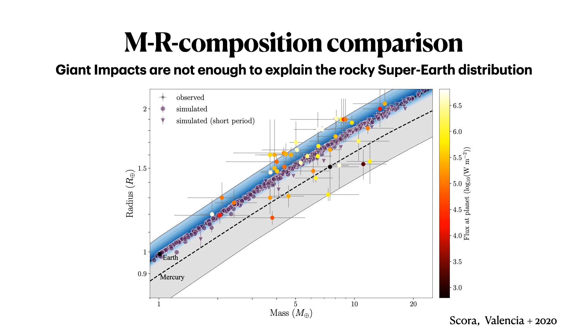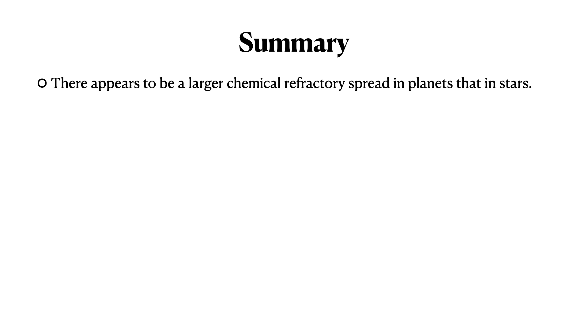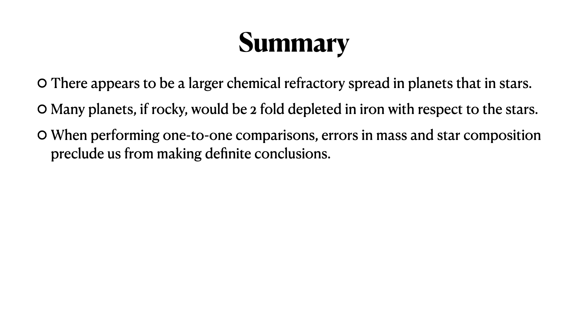And so of course it means we have to understand better how planets form, because it does seem that these planets are real. And so in summary, there appears to be a large chemical refractory spread in planets more than in stars. If, there are many planets that if rocky, there would be very depleted in iron with respect to the stars. And so it puts the onus on trying to see how you can form them, which we haven't been successful at. When performing one-to-one comparisons, it seems to me right now that the errors preclude us from making definite conclusions. But this, I would say is the first step into building a sample where we can make definite conclusions. It seems to be that there's a maximum iron enrichment of six grams per cc, perhaps coming from formation processes that need to be explained. But again, this is preliminary and we need to keep monitoring. And as I said, giant impact collisions widen the primordial distribution, but only modestly.